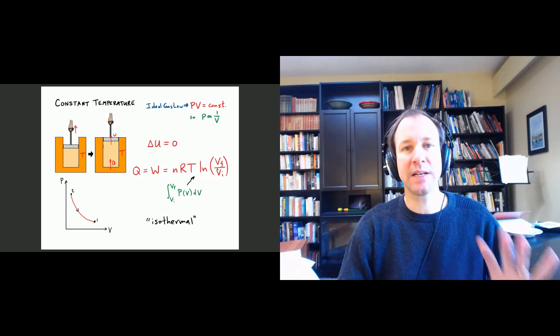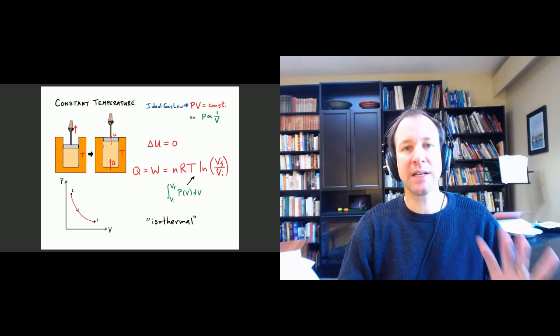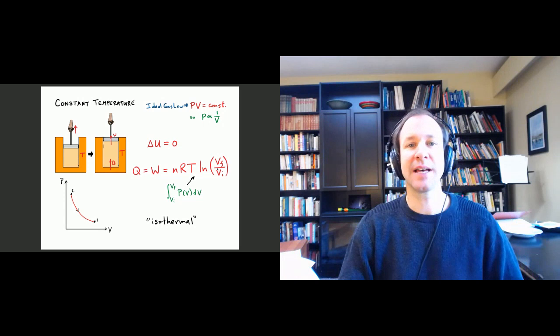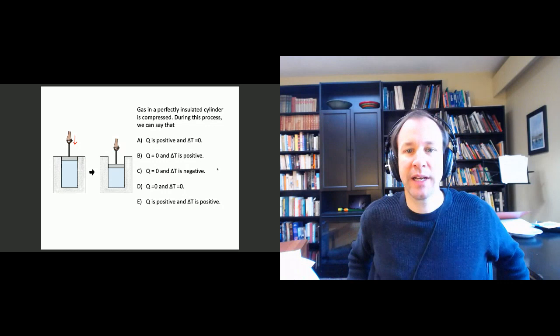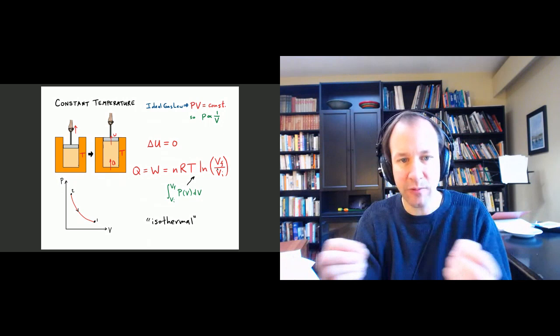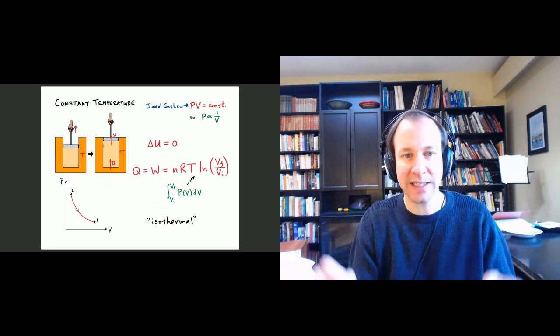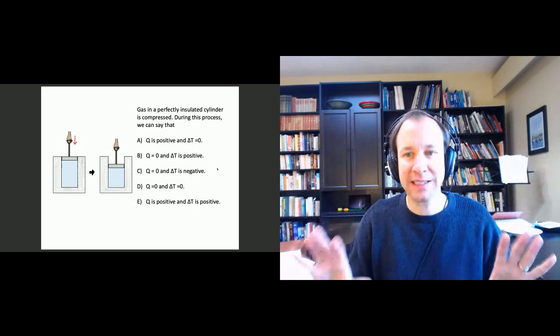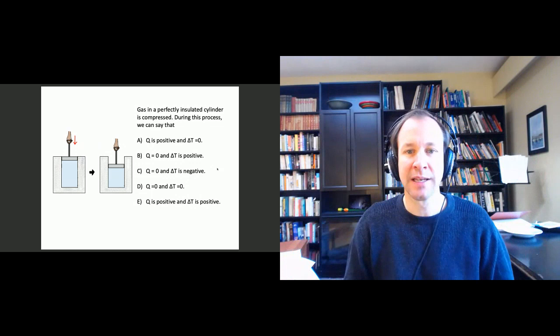Now we're ready to move on to a different type of process. To introduce that, I have a clicker question for you. Here we have a cylinder — it's almost like the opposite of the previous case, where we assumed the gas was always in thermal equilibrium with the surroundings. In this case, we're assuming that the cylinder is perfectly insulated, and we compress the gas in a perfectly insulated cylinder. Take a moment, pause the video, and think about what would be true in this case.